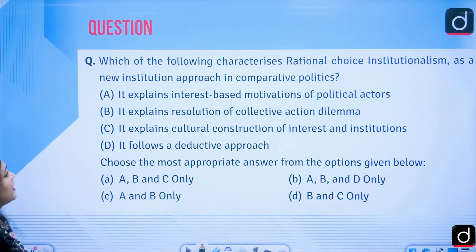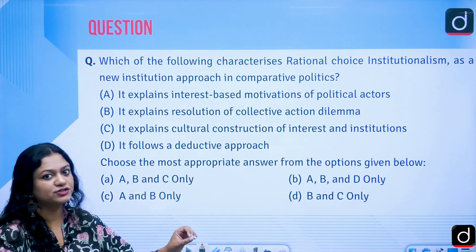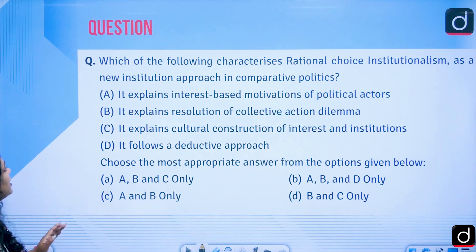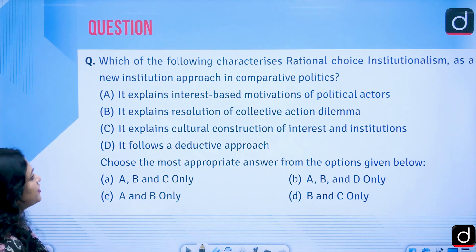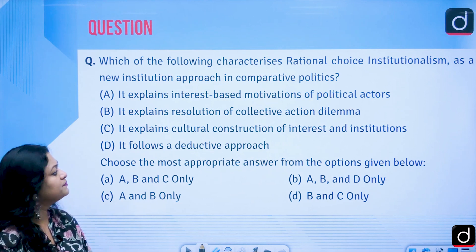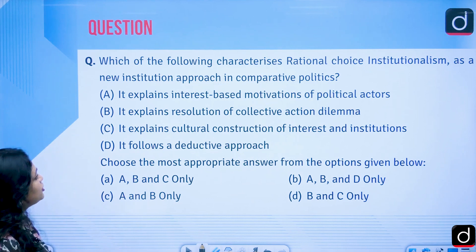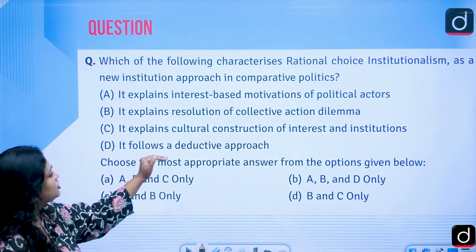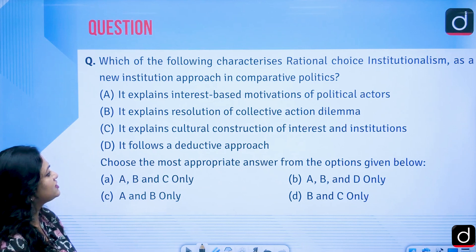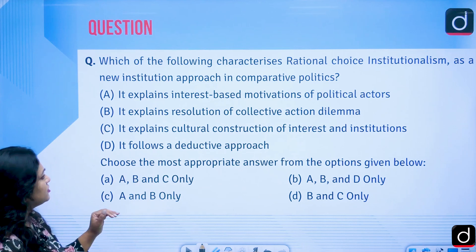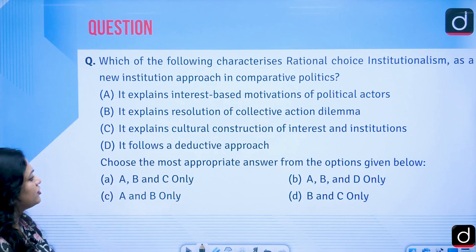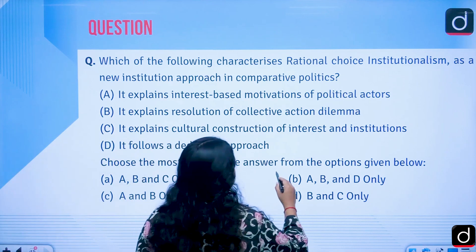Another UGC Net question: 'Which of the following characterizes rational choice institutionalism as a new institutional approach in comparative politics?' It explains interest-based motivations of political actors — true. It explains resolution of collective action dilemmas — yes. It explains cultural construction of interest and institutions — not much. It follows a deductive approach — correct. So the answer is A, B, and D.